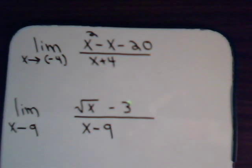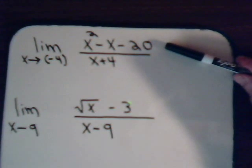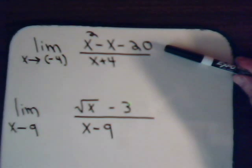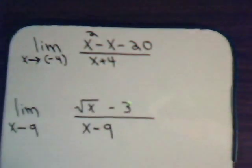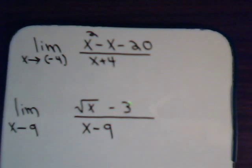At first, they both seem problematic because, for example, looking at this one we want to take the limit of this expression when x approaches minus 4, but that gives 0 down here in the denominator. And of course, anything divided by 0 is undefined.